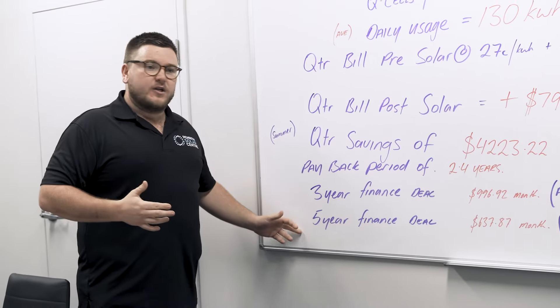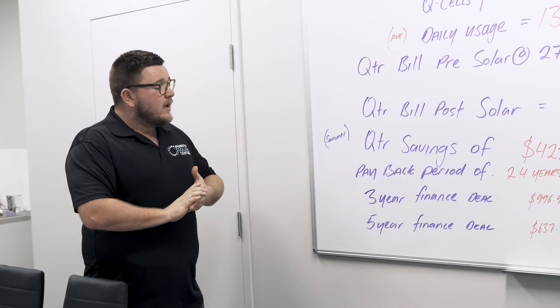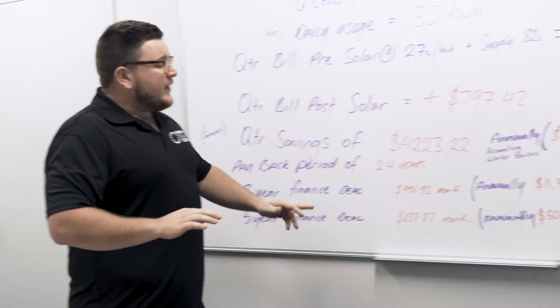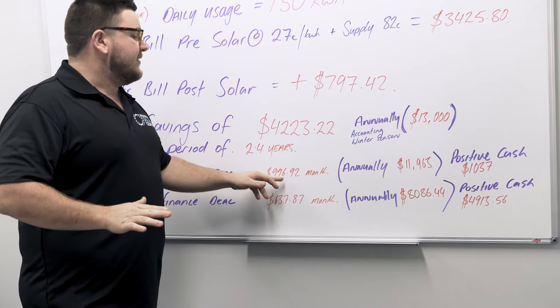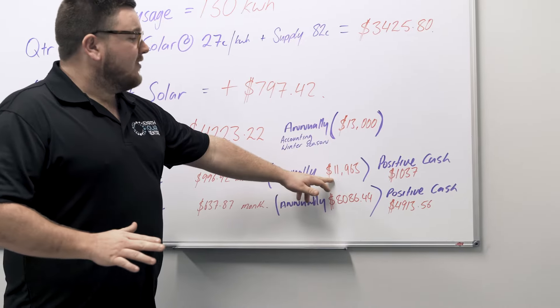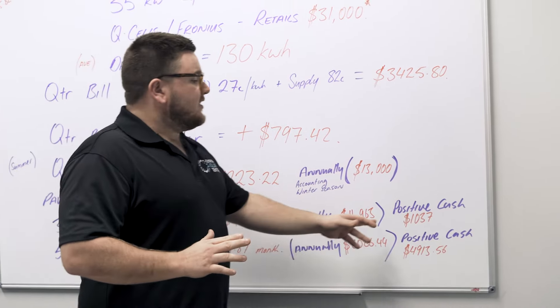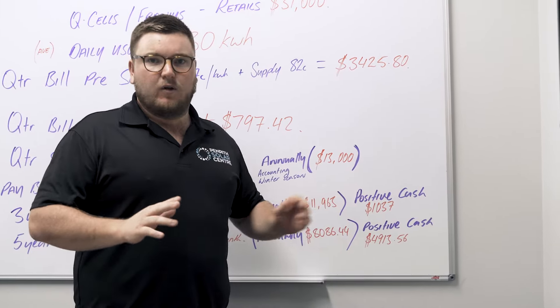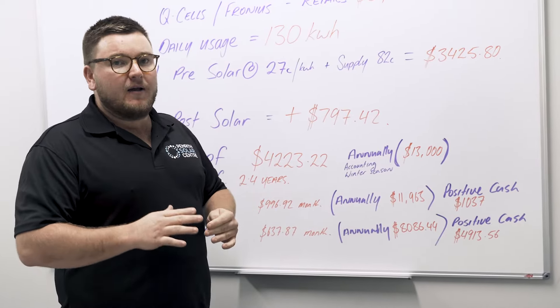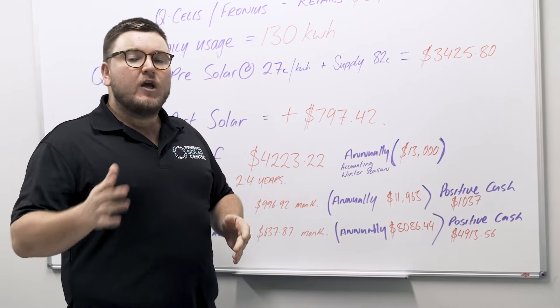If we finance this option, these are figures from Solaris Finance, our commercial lender that we do like to use. If we finance that on a three-year finance deal, you'd expect the repayments to be about $996.92 a month. Annually that's $11,963. Straight away from putting this system on, you can expect to put $1,037 in your pocket without you spending a cent. You don't have to put a deposit down pending approval, obviously. You don't have to put any money into it, any thought, you just have to give us the go-ahead and straight away you're $1,037 ahead.